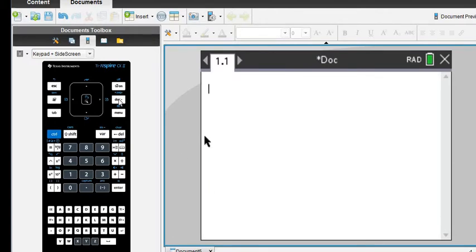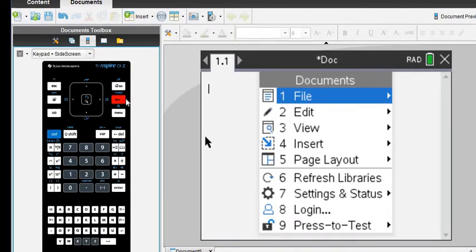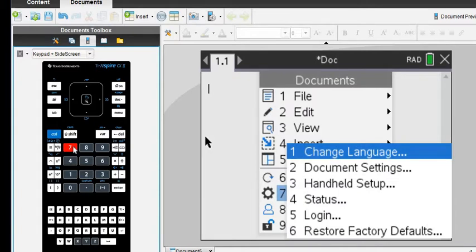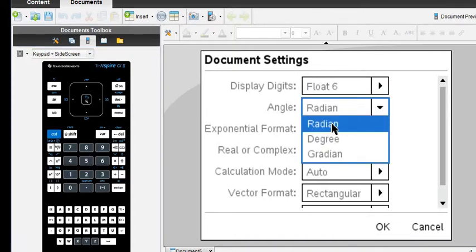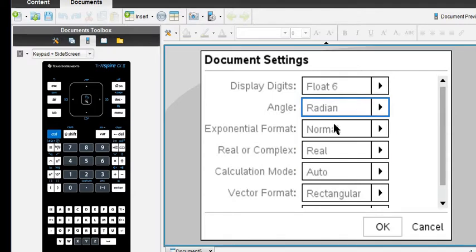Before I start, I do want to make sure that I'm in radian mode. To do that, you're going to hit the document button, option 7, the settings and status, and then go into document settings. Under angle, it's going to ask you, do you want radian, degrees, or gradients? Since this one is all in radians, we're going to keep it in radian, which is the default. But I wanted to show you how to get there in case you are working in degrees.